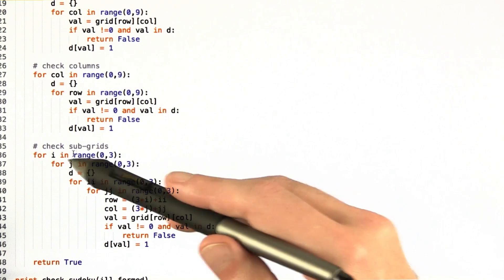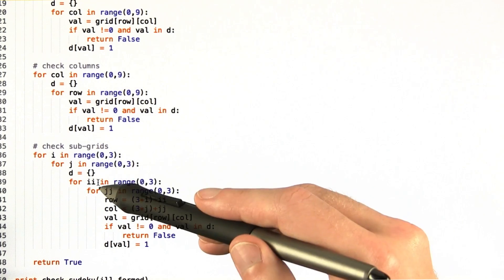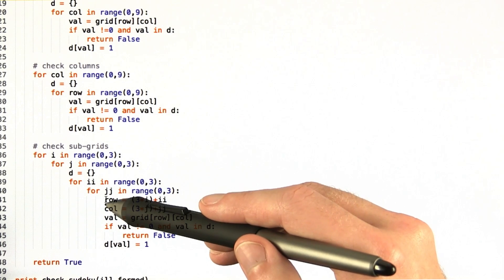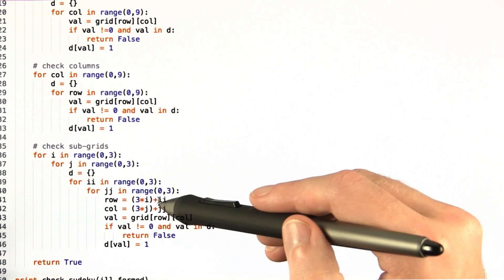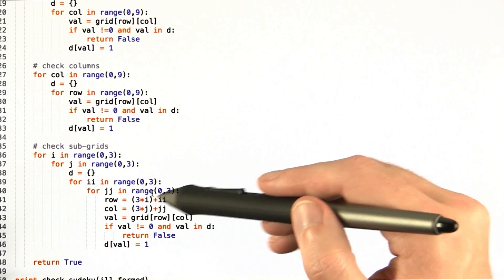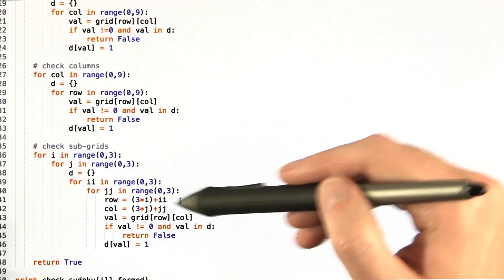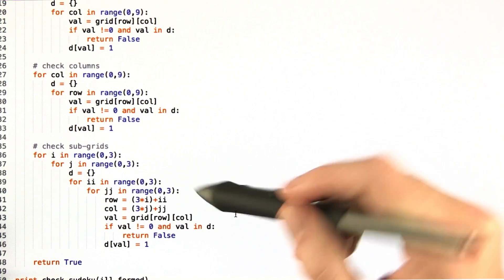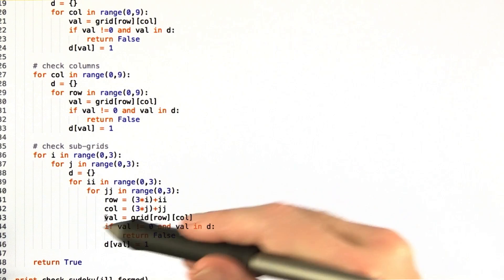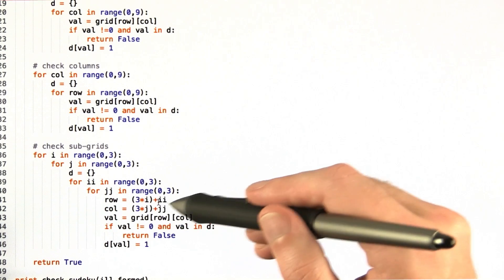But now we use ij, ii, and jj as a shifter to check the row and column spot for each of these. 3 times i plus ii shifts over to the appropriate subgrid, and similarly for the columns with j and jj.